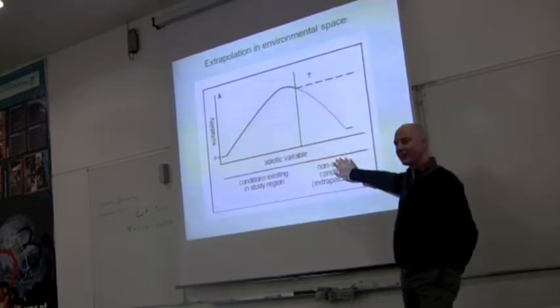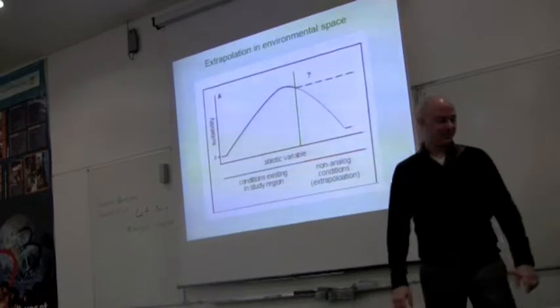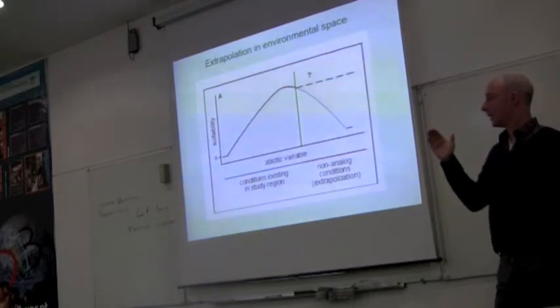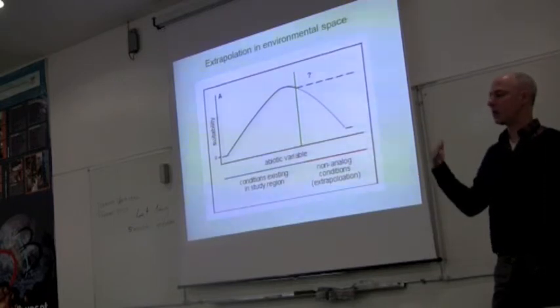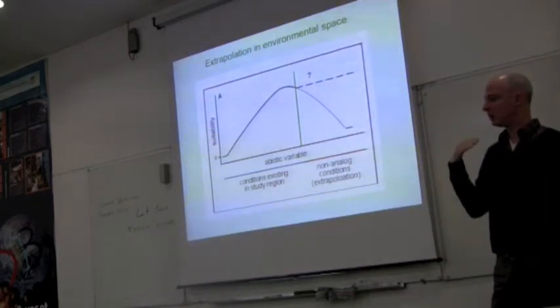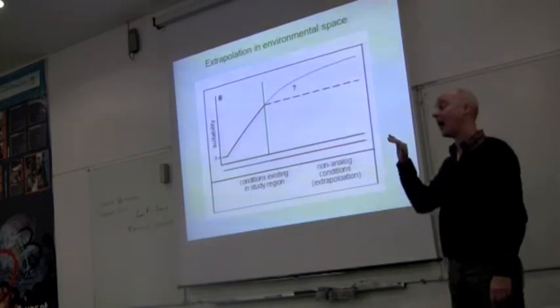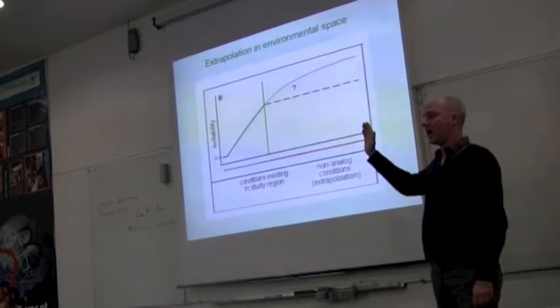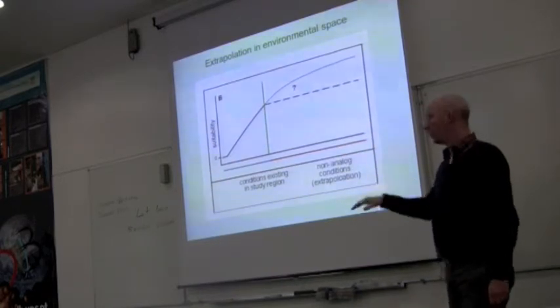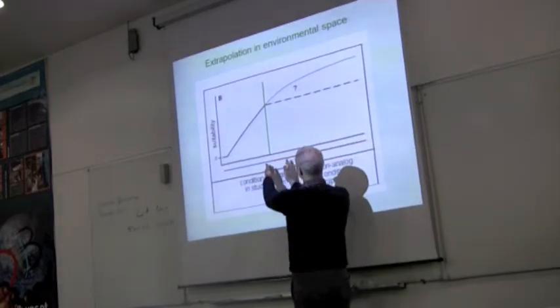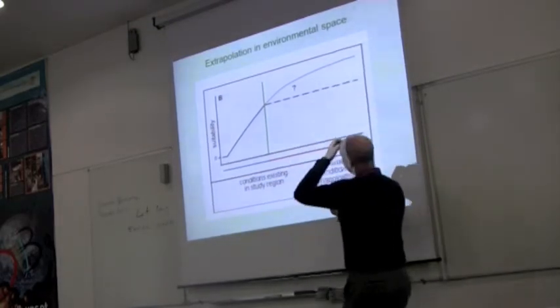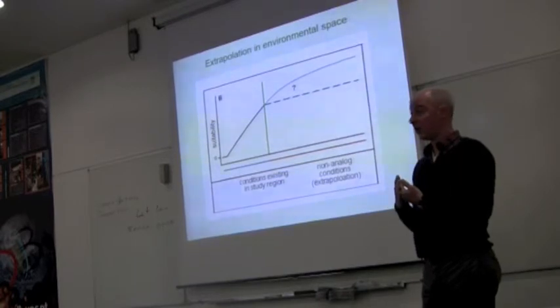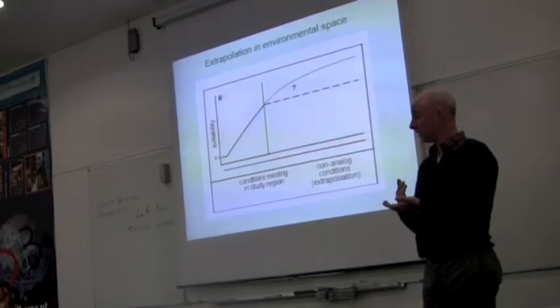So I mean one basic thing is if your response is going down, then clamping probably becomes more and more unrealistic the farther you go. Whereas if your response is going up, then allowing it to continue that response probably becomes more and more unrealistic as you go on compared to clamping. If you're not extrapolating very far in environmental space it may not make as much of a difference, but if you're extrapolating farther, then the decision of how you extrapolate becomes more and more important.